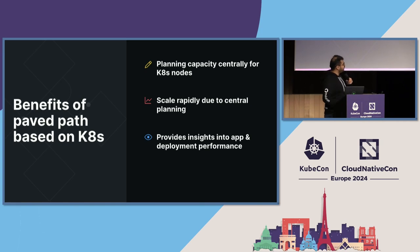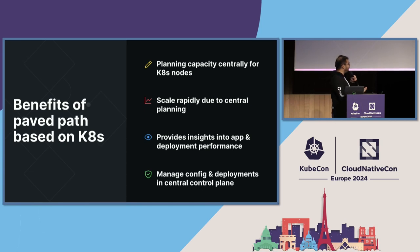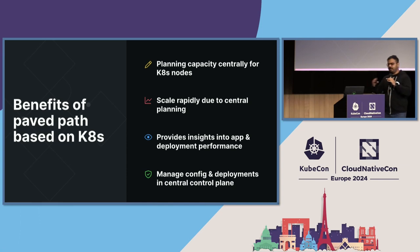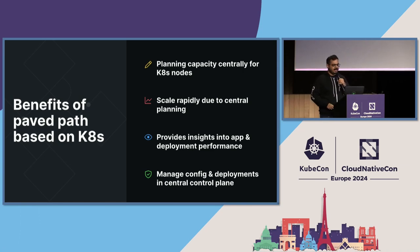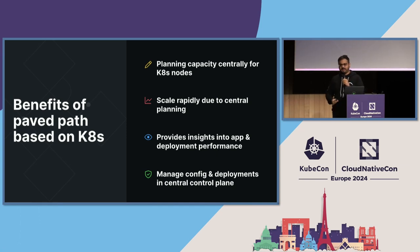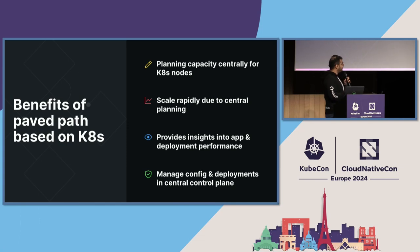Because Kubernetes is our base layer, it also becomes easy to manage all configuration and deployments in a central control plane without jumping across various different places. The kinds of services we typically run using the paved path include small web applications, computation pipelines, batch processors, and monitoring systems.